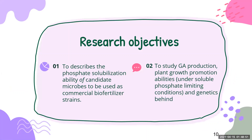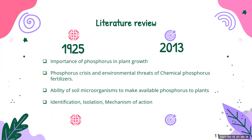Regarding this, they set the following objectives for their research: first, to describe the phosphate solubilization ability of candidate microbes to be used as a commercial biofertilizer strain, and to study gluconic acid production in correlation with plant growth promotion abilities under soluble phosphate limiting conditions and the genetics behind it. Literature studies published between 1925 and 2013 were done by the researchers to get deeper insight and prepare a strong base for their research.